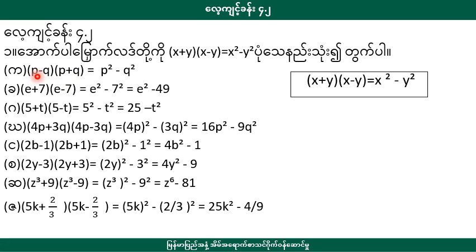So the second example: we can get b squared minus 2 squared. Now we get b squared minus 2 squared. Number eight: e plus 7 into e minus 7. This is equal to e squared minus 7 squared. Fifth: 5 plus d into 5 minus d, which gives us 5 squared minus d squared, that is 25 minus d squared.